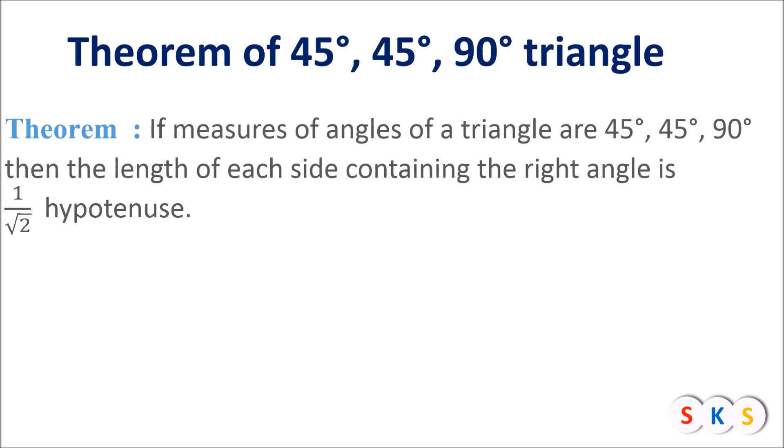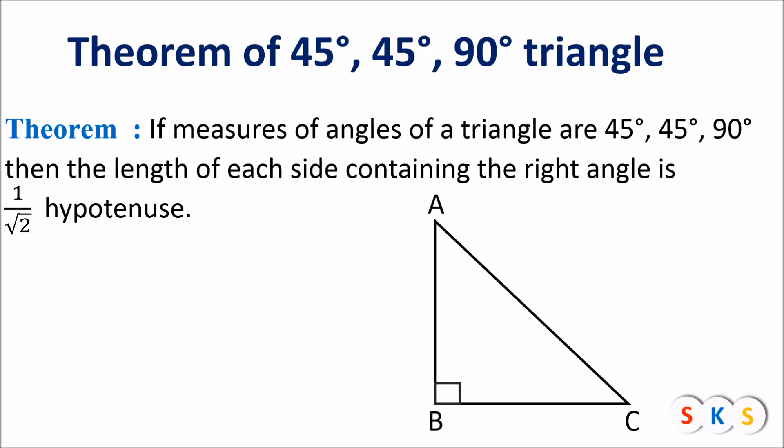Theorem of 45-45-90 degree triangle. Statement: if the measures of angles of a triangle are 45 degrees, 45 degrees, and 90 degrees, then the length of each side containing the right angle is 1 upon root 2 of the hypotenuse.